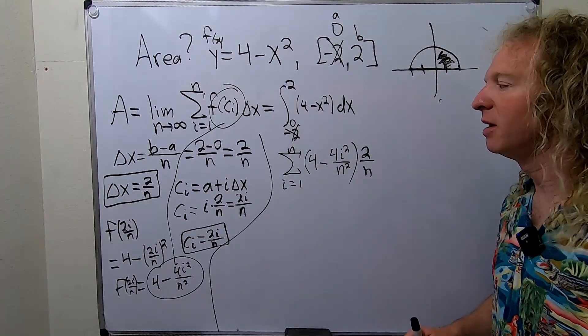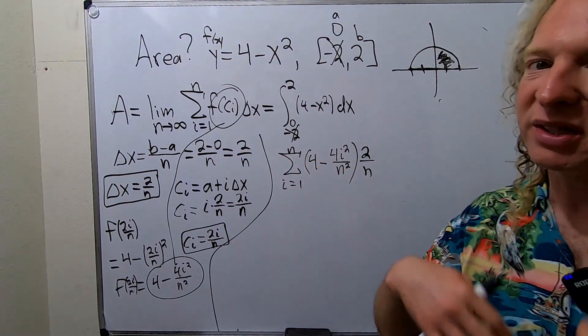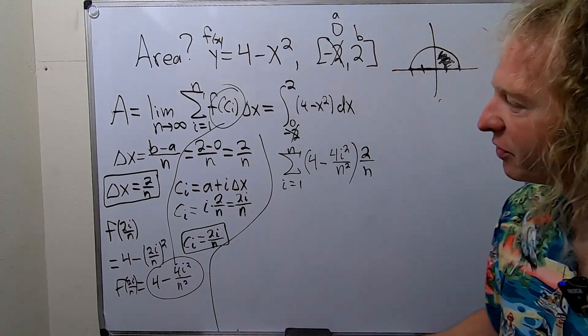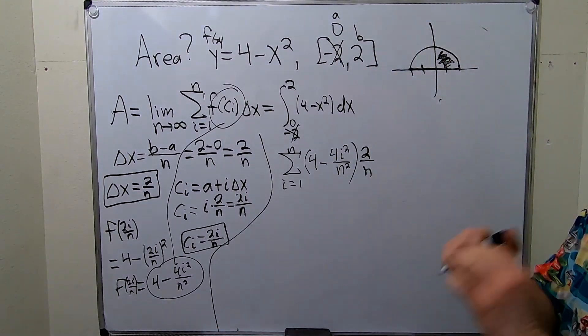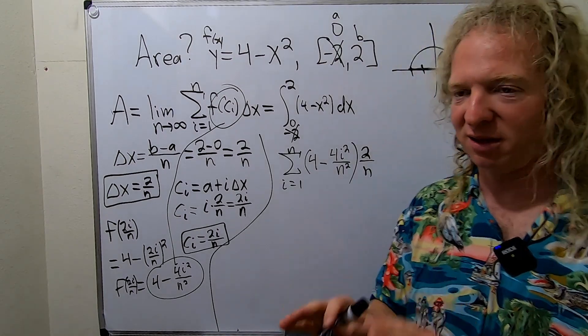I like to wait to the very end of the problem. Then I write the limit sign. Because once you write the limit, you have to keep writing it. Otherwise it's wrong. So I like to be really lazy and wait to the very end and then just take the limit at the end.